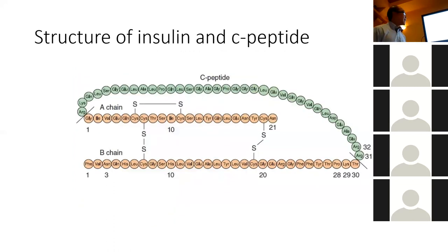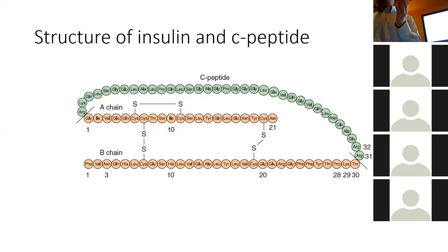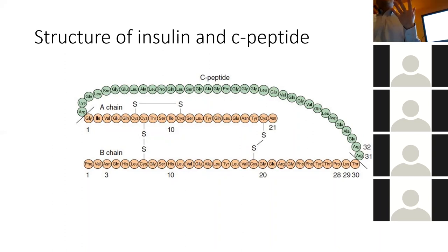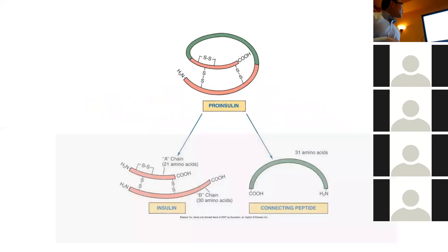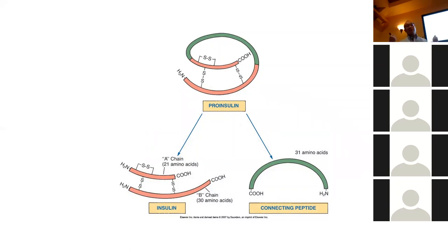Here's the structure of insulin and C-peptide. C-peptide extends the shelf life of insulin — it puts it into storage. When insulin is activated, you lose the C-peptide and then the insulin becomes active. You need to take off the C-peptide before the insulin is active.